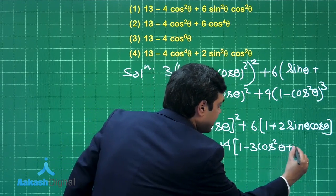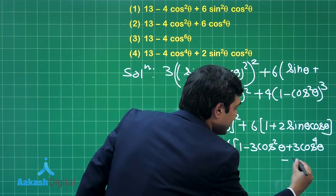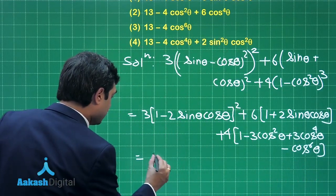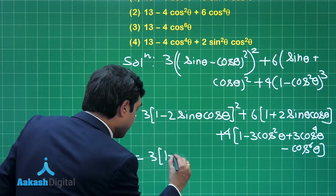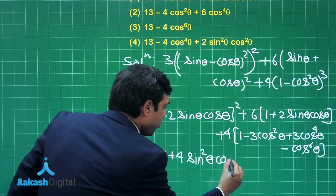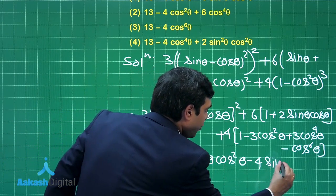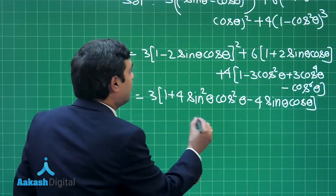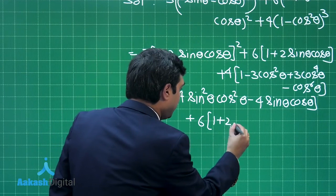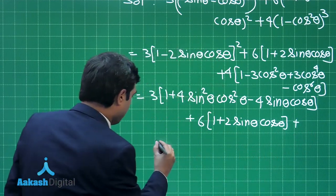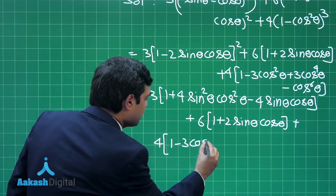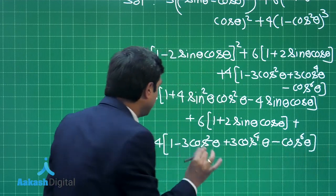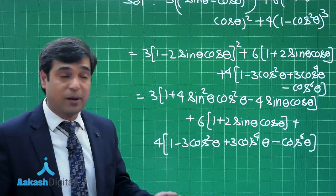We also have 4 times (1 minus 3 cos squared theta plus 3 cos 4 theta minus cos 6 theta). Continuing the simplification, the squared term gives 3 times 4 times (1 plus 4 sin squared theta cos squared theta minus 4 sin theta cos theta). The sin squared theta term needs to be converted into cos squared theta form.